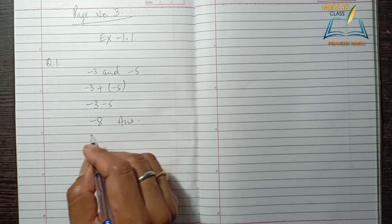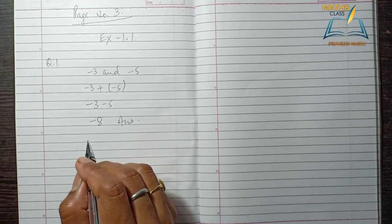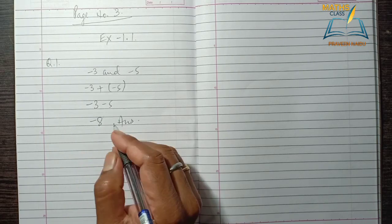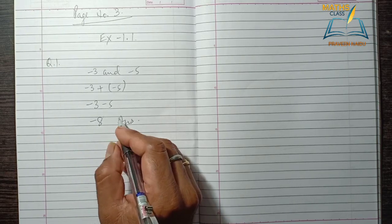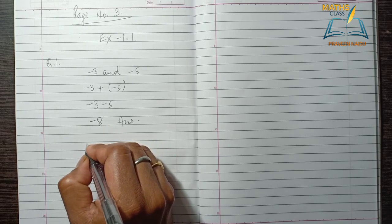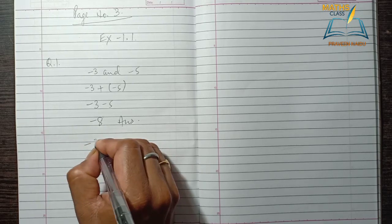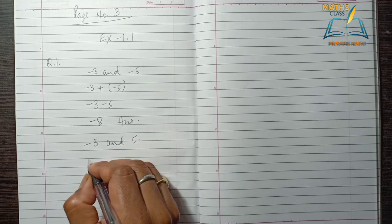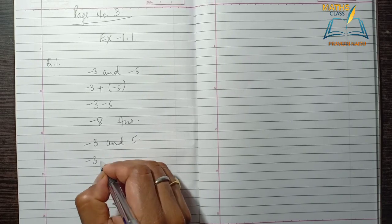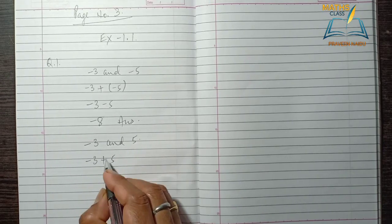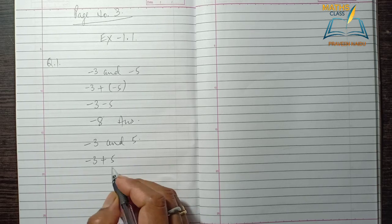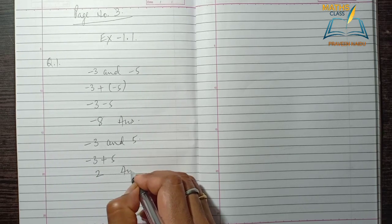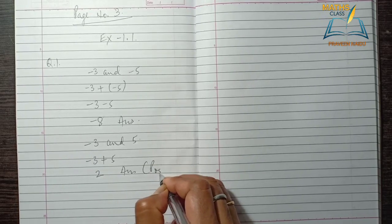The other way is when we take one integer positive and the other negative. For example, minus 3 and 5 — if we add minus 3 and 5, the result is 2, which is a positive integer.